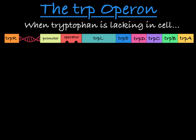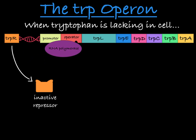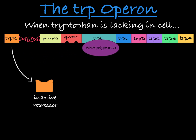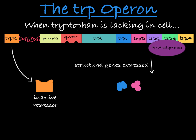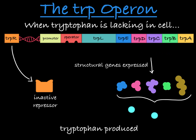When there's a lack of tryptophan in the cell, the cell needs to make more of it. The repressor is in an inactive form, and the RNA polymerase can bind to the promoter of the operon and transcribe the trp structural genes, leading to the production of tryptophan in the cell.